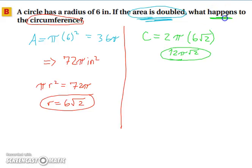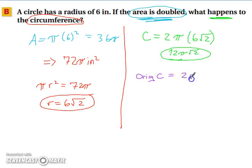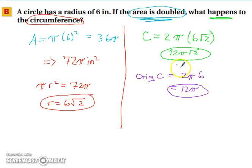But we want to know what's happening to the circumference — how it's changing. Our original circumference was 2 times pi times 6, which equals 12pi. Comparing, what do you multiply 12pi by to get 12pi times the square root of 2? The square root of 2. So when the area is doubled, the circumference is multiplied by the square root of 2.